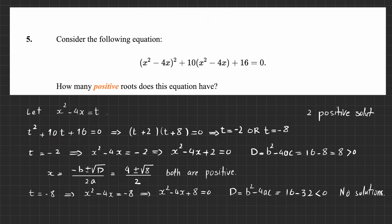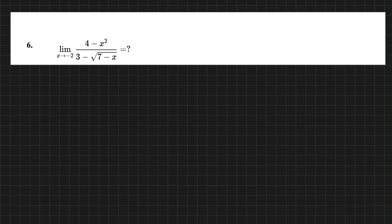The next question asks us to calculate the limit of (4 minus x squared) over (3 minus square root of (7 minus x)) as x approaches minus 2. As learned during the lesson, the first thing we do is substitute x equals minus 2. The numerator gives 4 minus 4 equals 0, and the denominator gives 3 minus square root of 9 equals 3 minus 3 equals 0. So we have the indeterminate form 0 over 0.